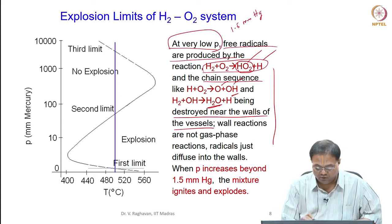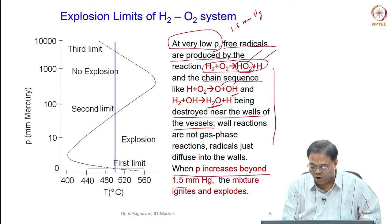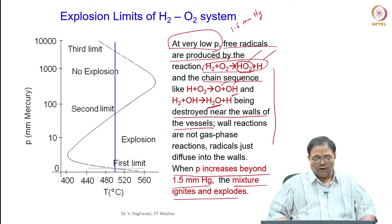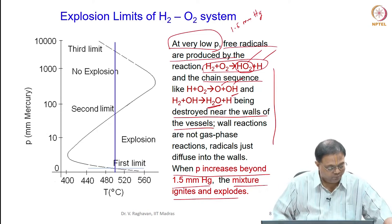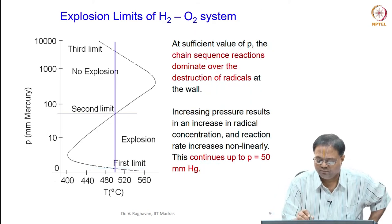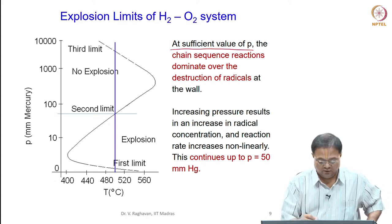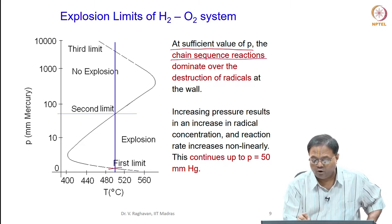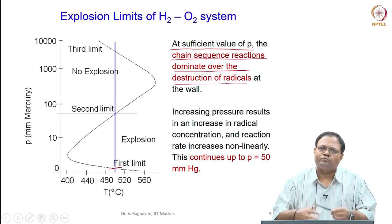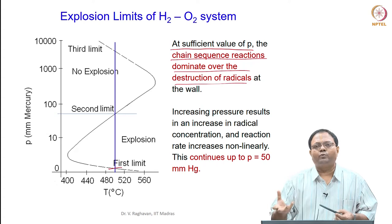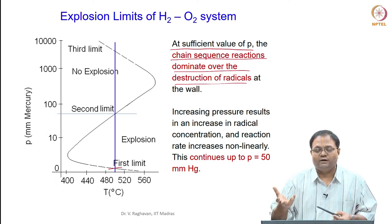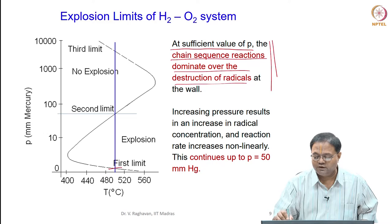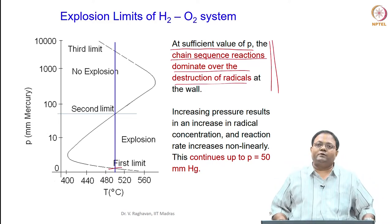The first limit: when the pressure increases beyond 1.5 mm mercury, the mixture ignites and explodes. The reason is simple - from the first limit to the second limit, the chain sequence reactions dominate over destruction. The concentration of the mixture is higher, more radicals are produced, and the number of radicals sustained is higher than those lost in the walls. The reaction sustains and ignition occurs.